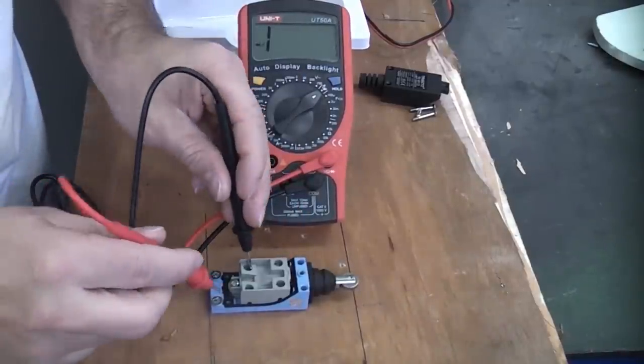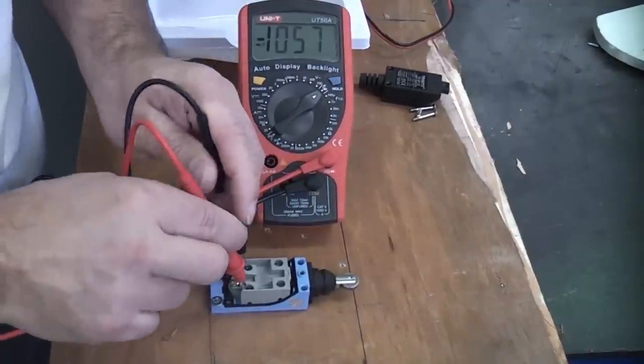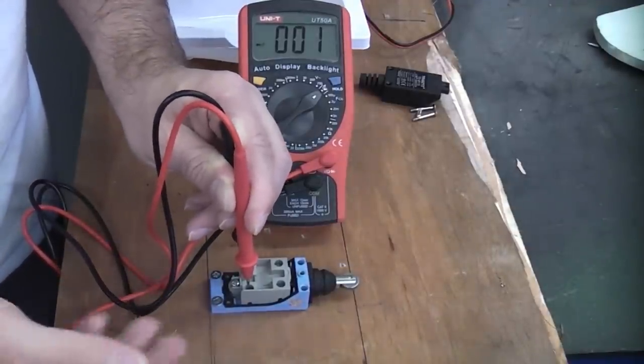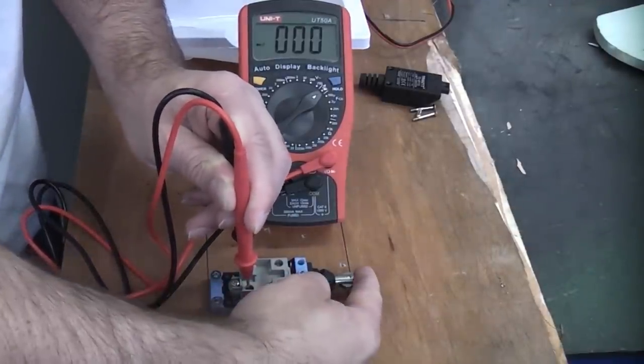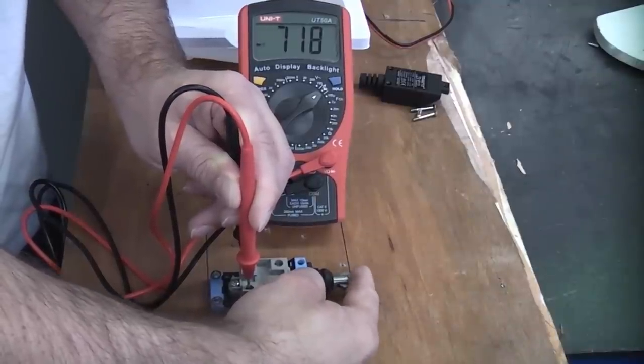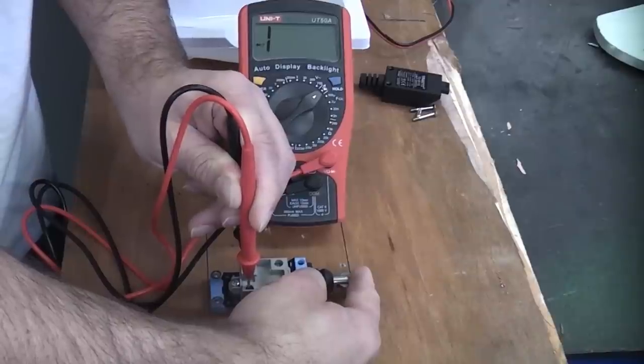If we put the two probes on the normally closed contacts you'll see that the tester is bleeping all the time because we have continuity there. Once we press the switch in that breaks the contact. Let it go again, makes the contact. Press it in again, breaks the contact.